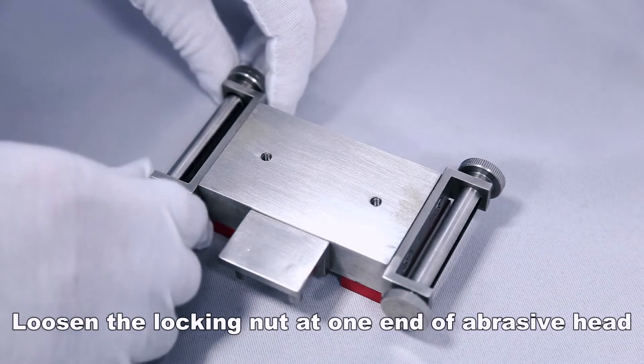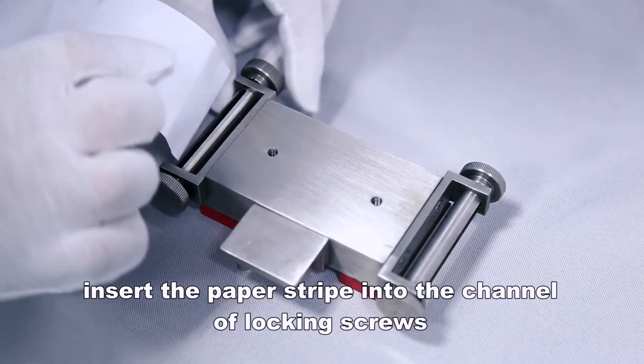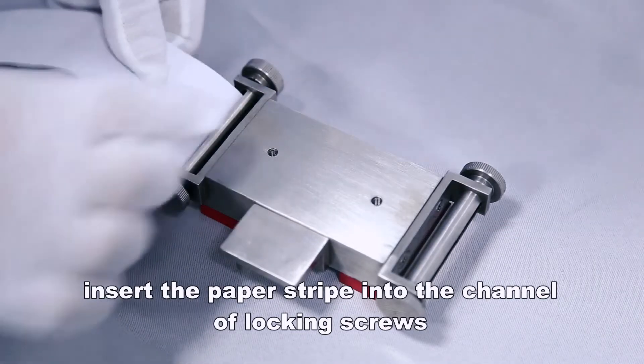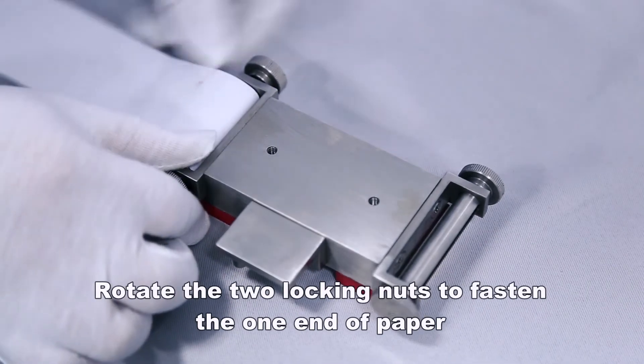Insert the paper stripe into the channel of locking screws. Rotate the two locking nuts to fasten one end of the paper.